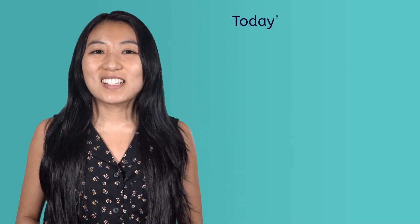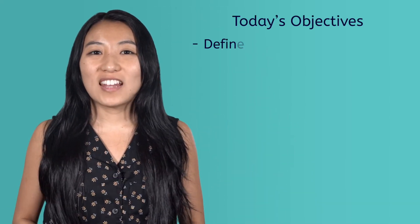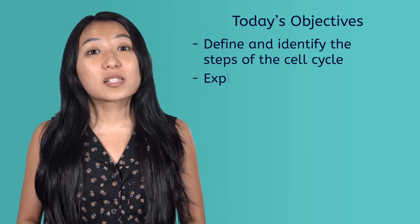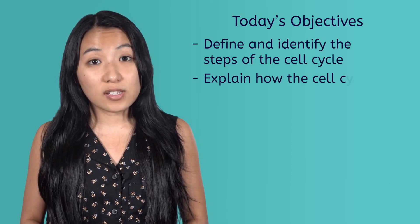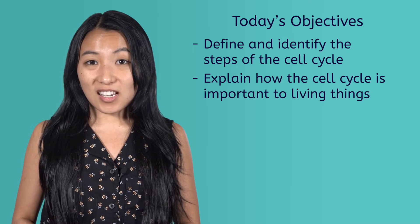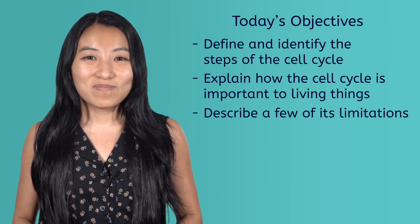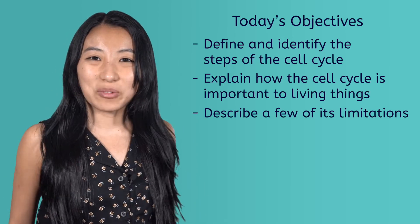Luckily for us, our body has a way of replacing our hard-working cells so we can live much longer on average than they do. After today's lesson, you'll be able to define and identify the steps of the cell cycle, explain how the cell cycle is important to living things, and describe a few of its limitations. Let's get into it!